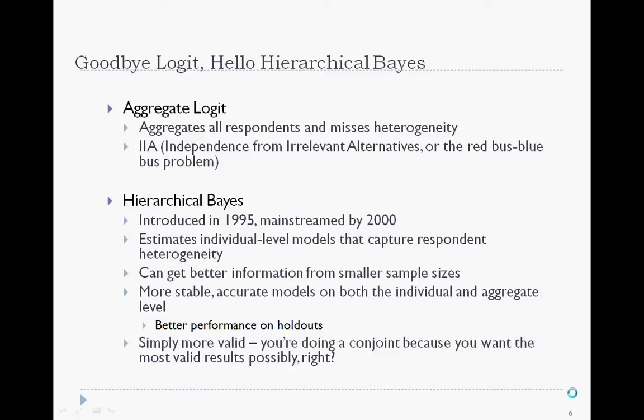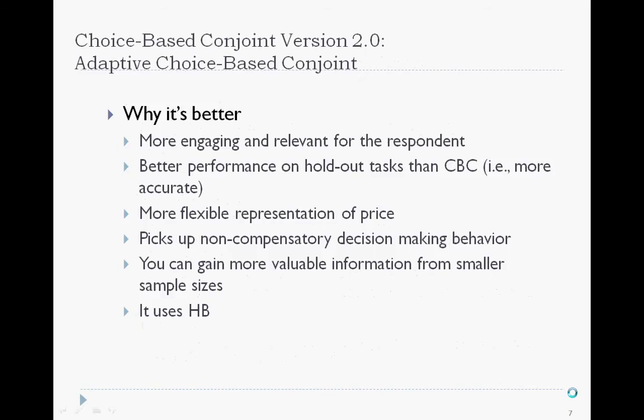Hierarchical Bayes — HB — is the new standard for analyzing choice-based conjoint data, though 'new' is relative as it's been mainstream for the past 10 years. HB produces utilities that better match holdout tasks, meaning the model is more accurate, and it preserves respondent heterogeneity through individual-level modeling. You can do great things like carry conjoint results into a segmentation analysis, and you can gain more useful information than with aggregate logit when using smaller sample sizes. Note that normal issues of sample size related to generalizing to your population still apply. Aggregate logit has been on its way out for at least 10 years, so be careful of using 1990s technology.